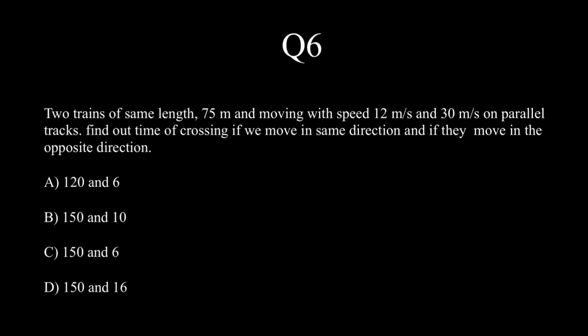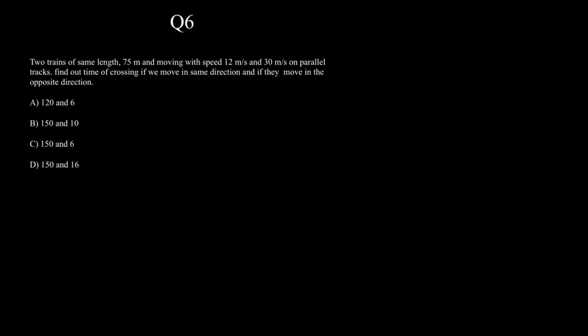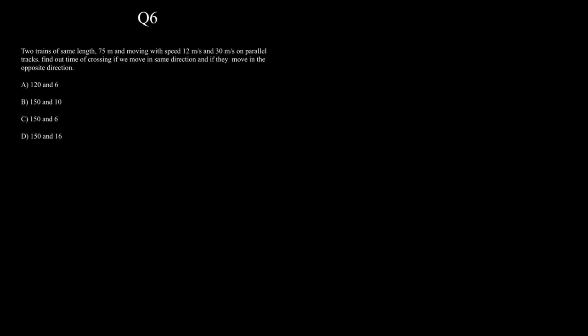Next: two trains of the same length 75 m, moving with speeds 12 m/s and 13 m/s on parallel tracks. Find the time of crossing if they move in the same direction, and if they move in the opposite direction. Let's solve both cases using relative velocity and also the conventional method.